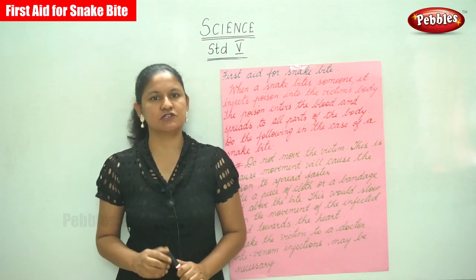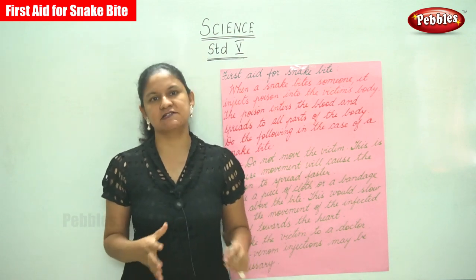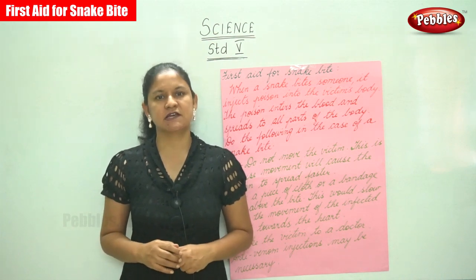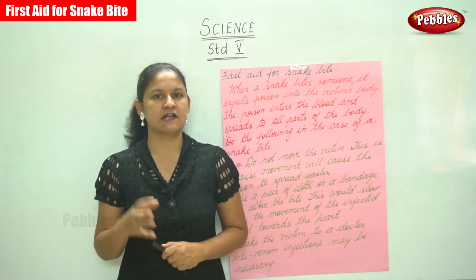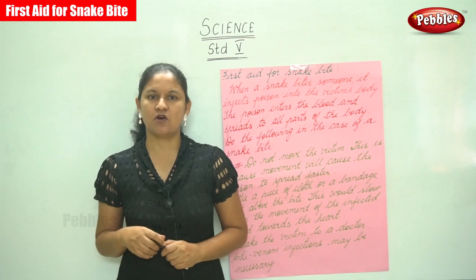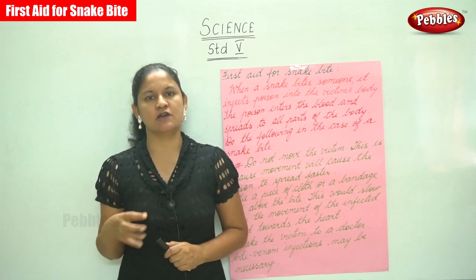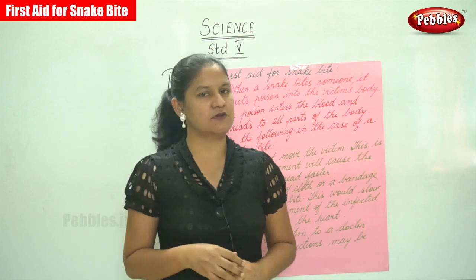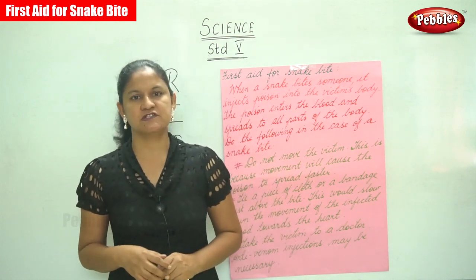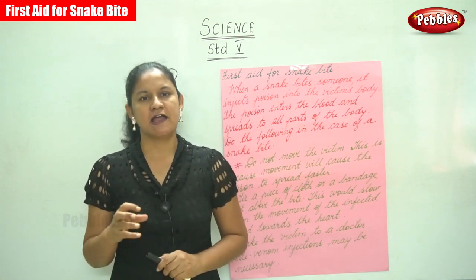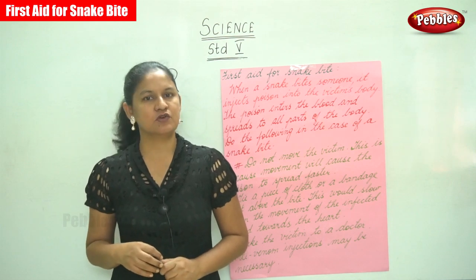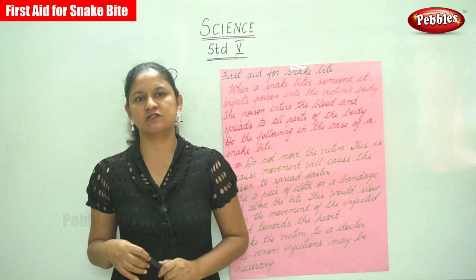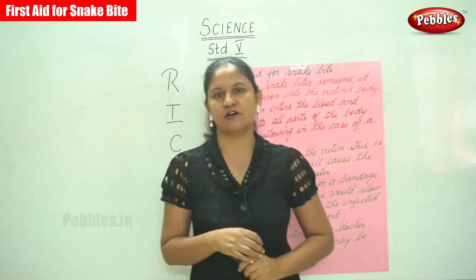We were talking about animal bites like cats, dogs and rats, and we saw that the saliva of these animals carries the germs of a deadly disease called rabies. The first step we need to follow is to wash the affected area thoroughly with soap and water at least three times in order to remove the saliva.